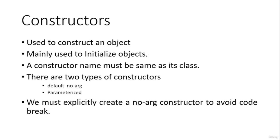A constructor can be created by using the class name followed by function brackets and a block. The constructor syntax is similar to a method, but the difference is that the constructor will not return anything. Eventually it will return an instance of an object, but in the code we will not explicitly return anything.